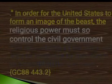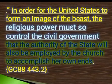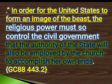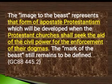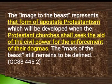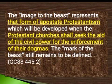In order for the United States to form an image of the beast, the religious power must so control civil government that the authority of the state will also be employed by the church to accomplish her own ends. The image of the beast represents that form of apostate Protestantism which will be developed when the Protestant churches shall seek the aid of the civil power for the enforcement of their dogmas.